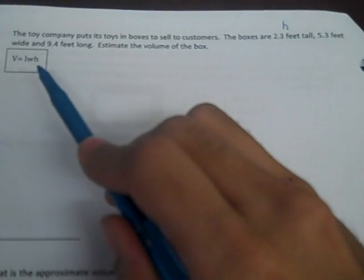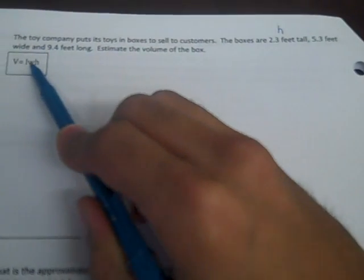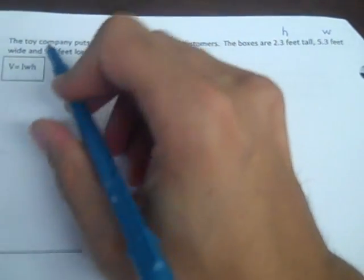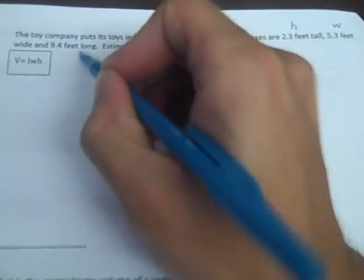Then 5.3 feet wide. Wide is going to tell me the W in the formula, volume equals length times width times height. So I'm going to write a W next to the 5.3. And 9.4 feet long. Long is going to tell me length. So I'm going to write an L next to that, 9.4.